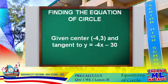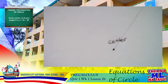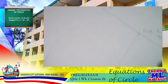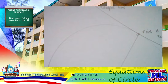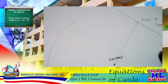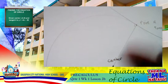For this case, we are given only the center and the tangent line. Looking at this diagram, we have the circle, the center, and the tangent line. A tangent line is a line that touches the circle at one point. When we connect the center and the point of tangency, it forms a perpendicular line.